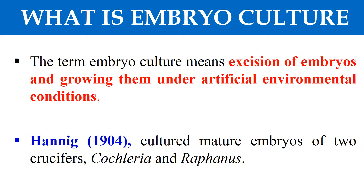Here we excise the embryo and grow it under artificial conditions. The first attempt to grow the embryos of angiosperm under in vitro conditions was done by Henning in 1904, who cultured the embryo of two crucifers — Cochlearia and Raphanus. So embryo culture is simply the culturing of embryos under artificial conditions.